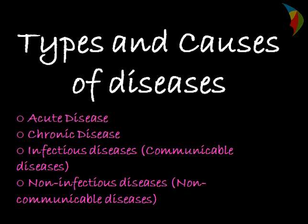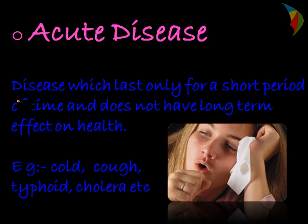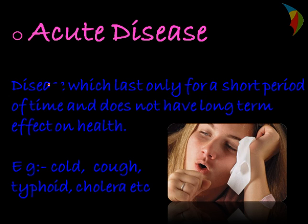There are different types of diseases: acute disease, chronic disease, infectious disease, and non-infectious disease. The first type is acute disease — a disease which lasts for a short period of time and does not have a long-term effect on health.